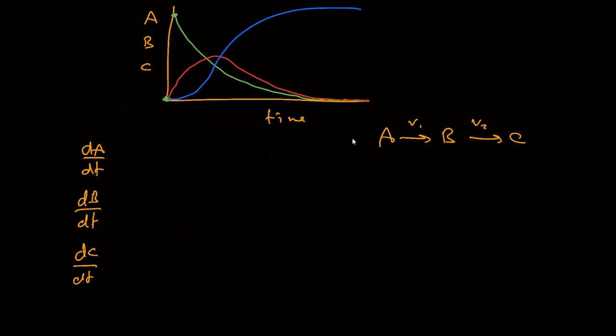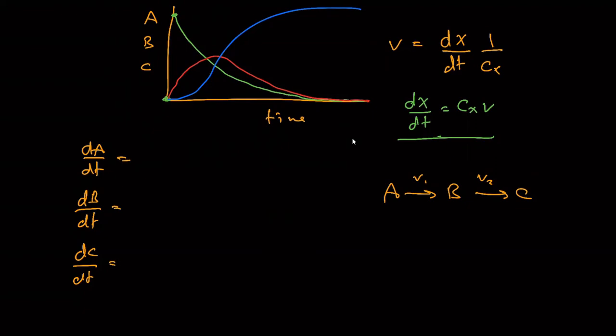What's the rate at which A changes? Now, remember earlier we had the reaction rate was defined as the rate of change of some compound X divided by its stoichiometric coefficient. So I can rearrange that so that I get DX by DT equals CX times V. So this is a form in which I'm going to write these three equations down.